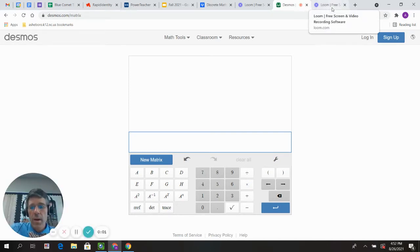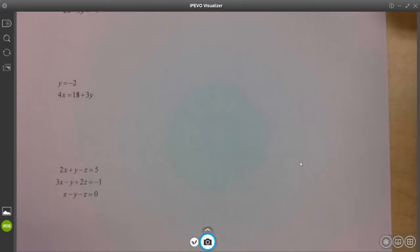Alright, here we go. We are going to continue with this lesson. I'm back on the desmos.com slash matrix website, and things are going to get a little bit different because it's going to take a little bit of work before we actually get into the problem. We're going to have to set things up a little bit. Let's do it.